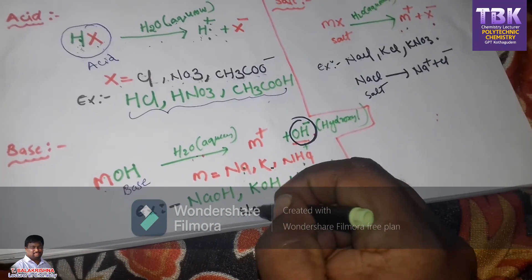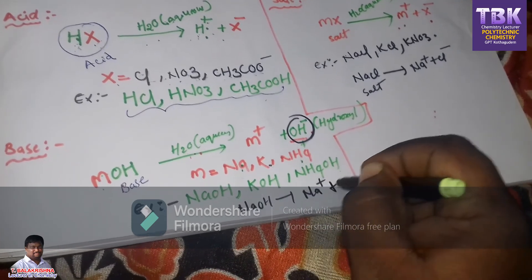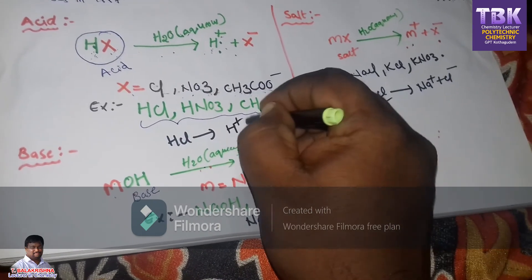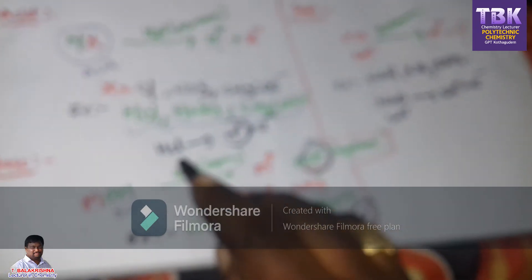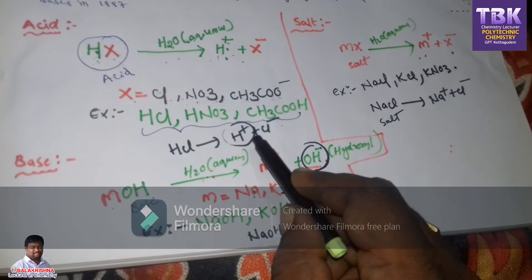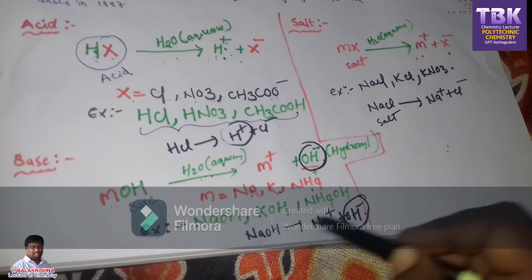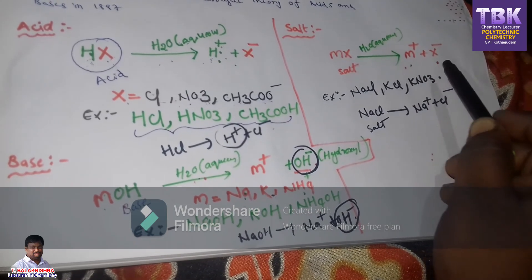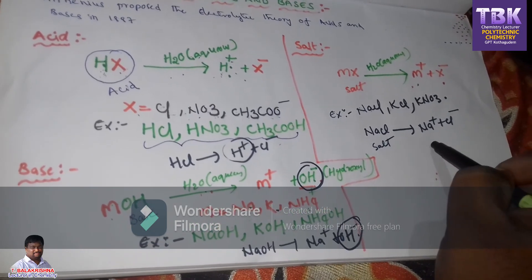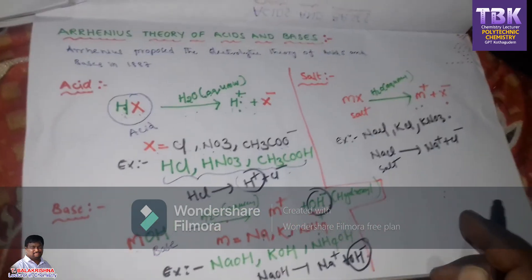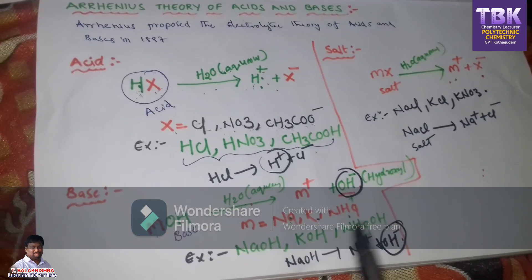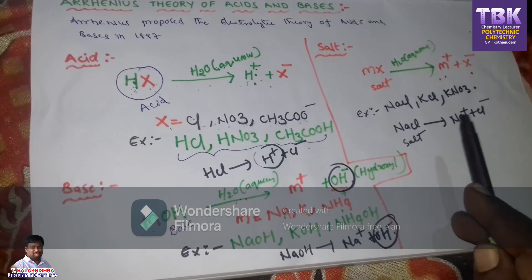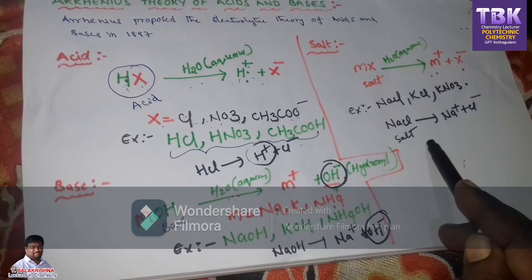When sodium hydroxide is dissolved in water, it produces Na+ and OH minus, so it is a base. When HCl is dissolved in water, it produces H+ ion and Cl minus ion, so it is an acid. When a substance dissolved in water produces H+ ions, it is an acid; when it produces OH minus ions, it is a base; and when it neither gives H+ ions nor OH minus ions — like NaCl, which gives Na+ and Cl minus — it is a salt. According to the Arrhenius theory: acid produces H+ ions in aqueous solution, base produces OH minus ions in aqueous solution, and salt neither gives H+ ions nor OH minus ions in aqueous solution.